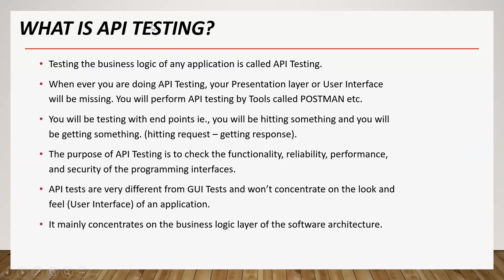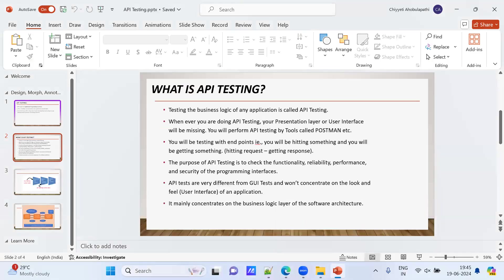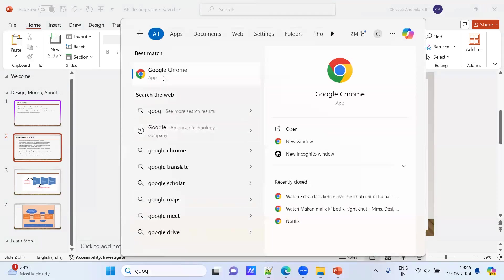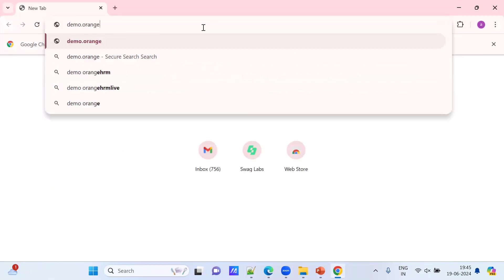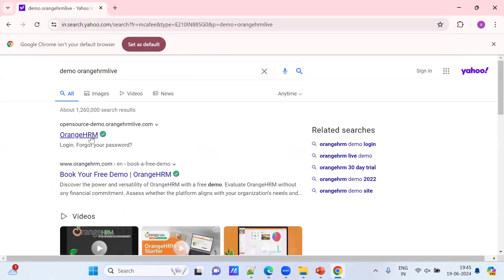API testing is defined as testing the business logic of any application. We are going to test the business logic — nothing but the code. When you are doing API testing, your presentation layer or user interface will be missing. You can access any application — for example, demo.orangehrm.com — that is the presentation layer for us.